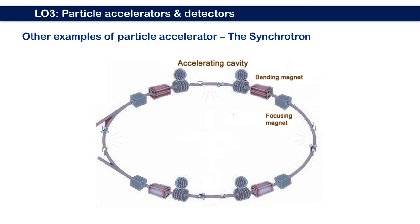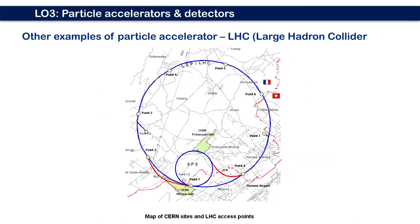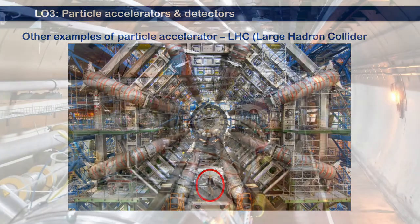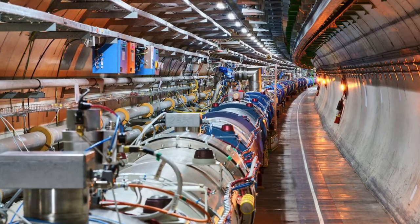This is the synchrotron, which is one of the other examples of particle accelerator. Here is the LHC or Large Hadron Collider. LHC is by far the most powerful particle accelerator built to date. It is so big because huge forces are needed to accelerate and detect the high energy.